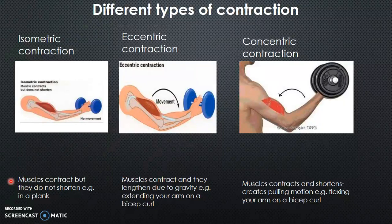Eccentric contraction is where the muscles contract and they lengthen due to gravity — for example, extending your arm on a bicep curl, or bending down before jumping for a jump shot.